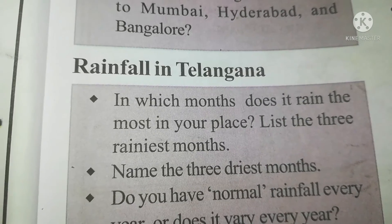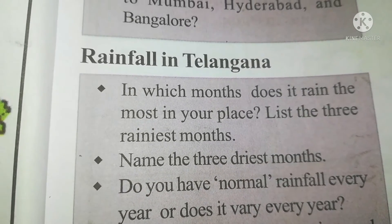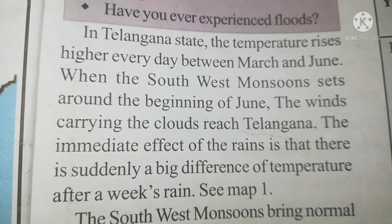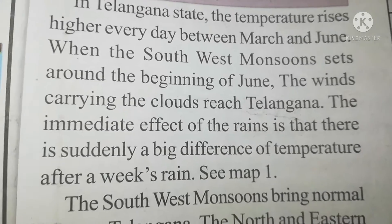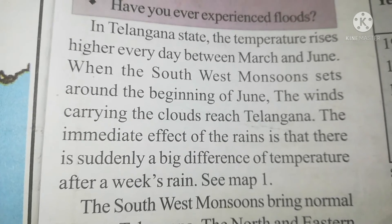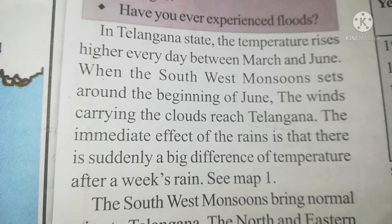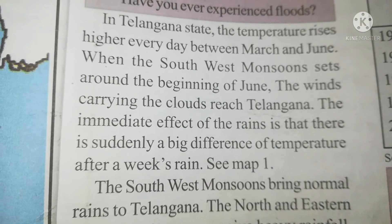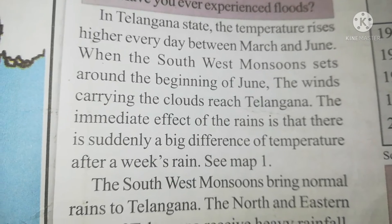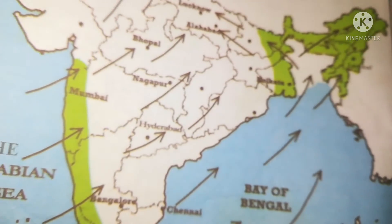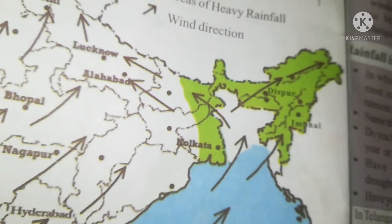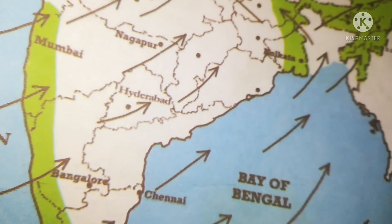Next, let us see about rainfall in Telangana. In which state are we living? We are living in Telangana state. In Telangana state, the temperature rises higher every day between March and June. When the southwest monsoon sets around the beginning of June, the winds carrying the clouds reach Telangana. The immediate effect of this rain is that there is suddenly a big difference of temperature. States with heavy rainfall include Mumbai, Bangalore, Kolkata, Dispur, and Imphal. This light green color shows the states with heavy rainfall.